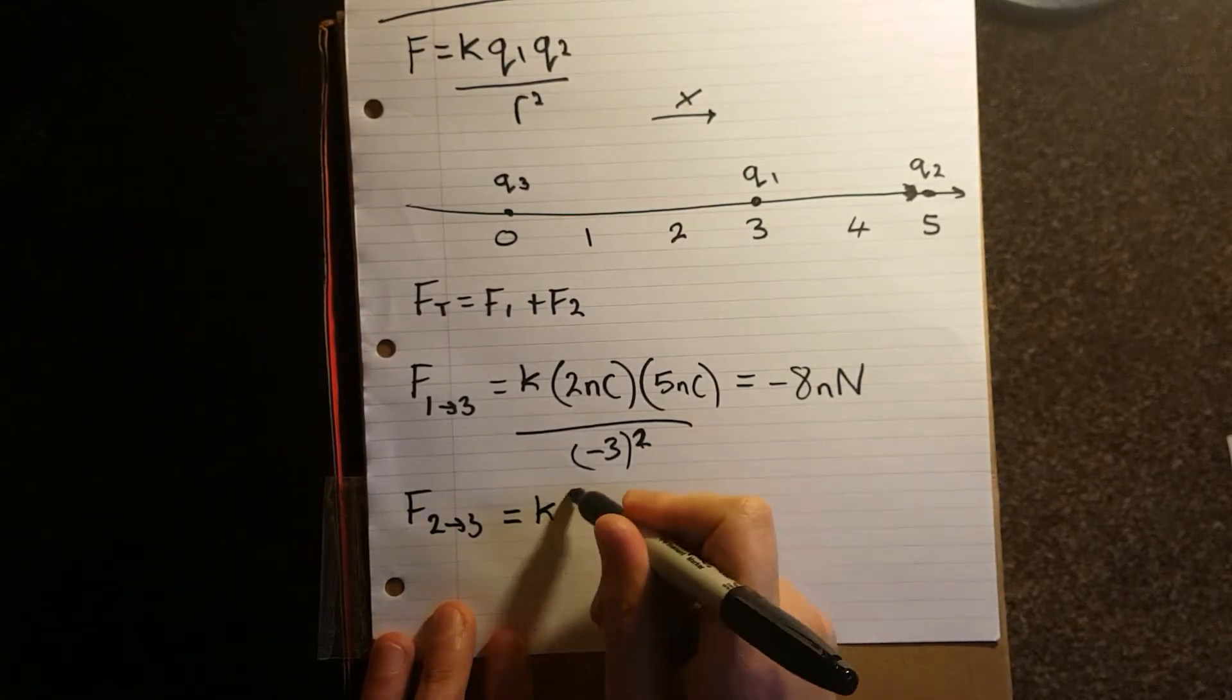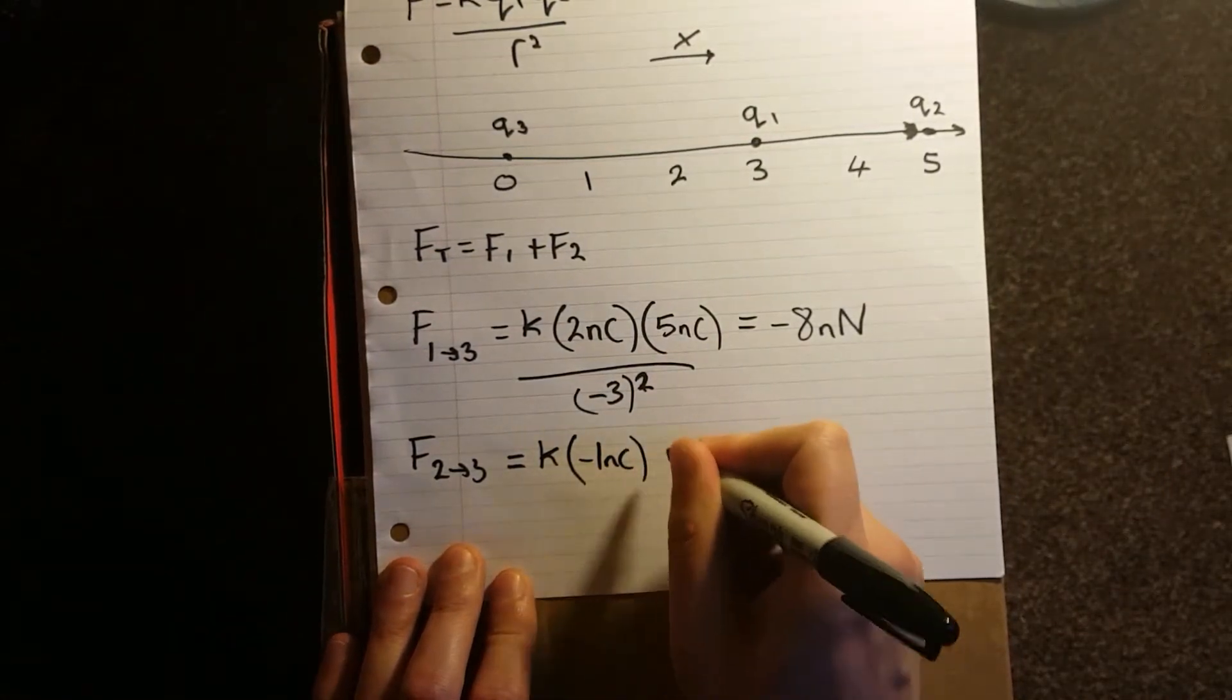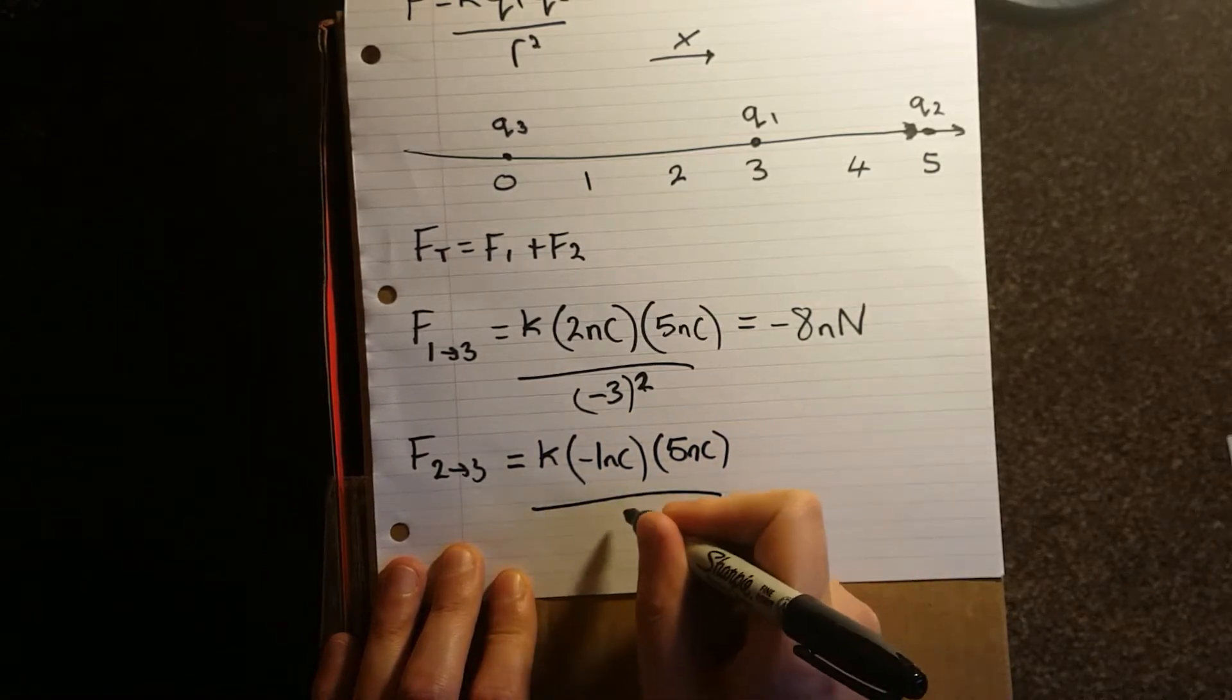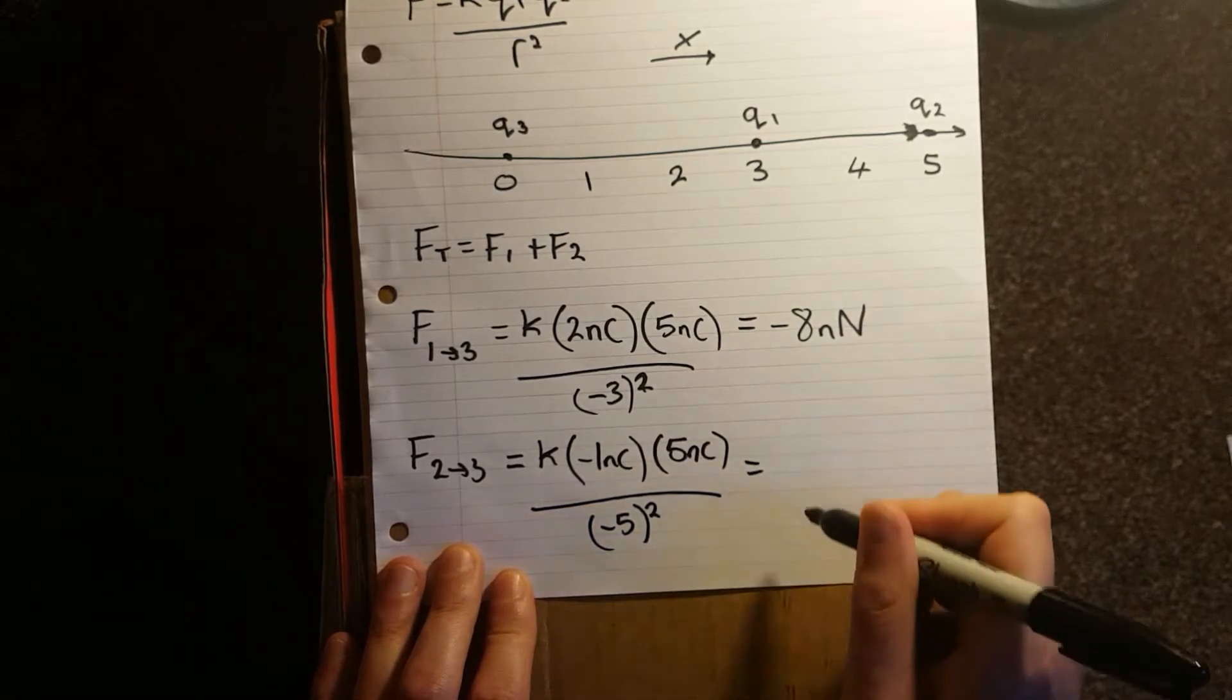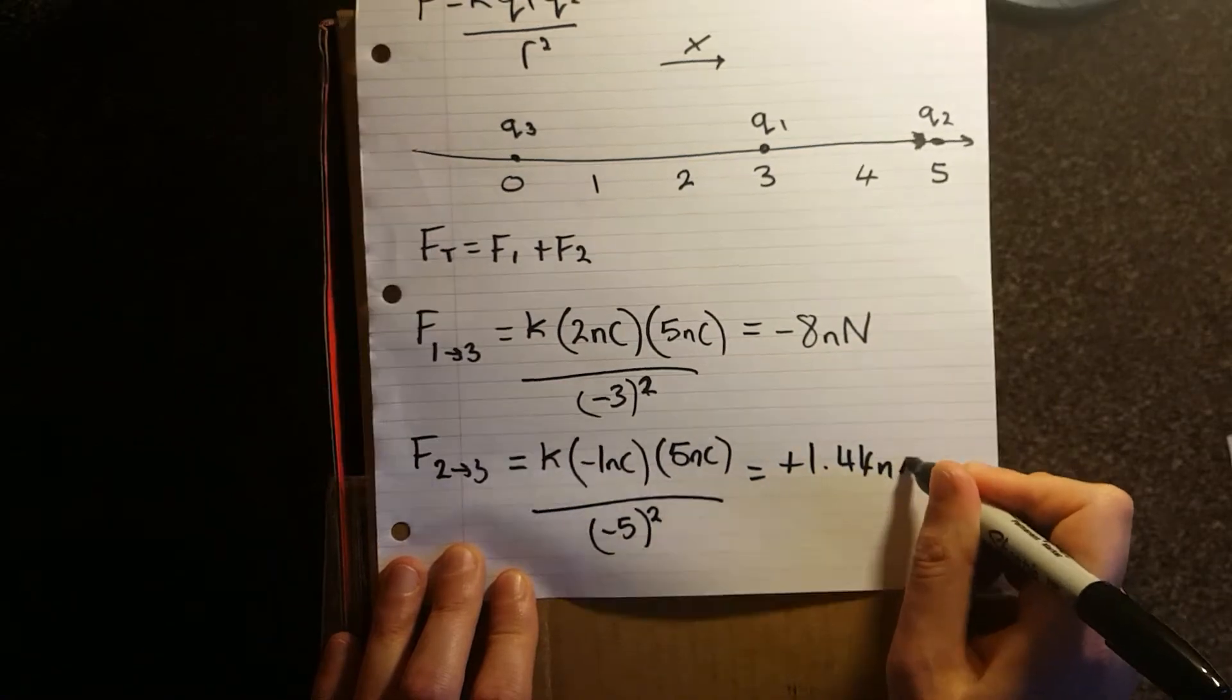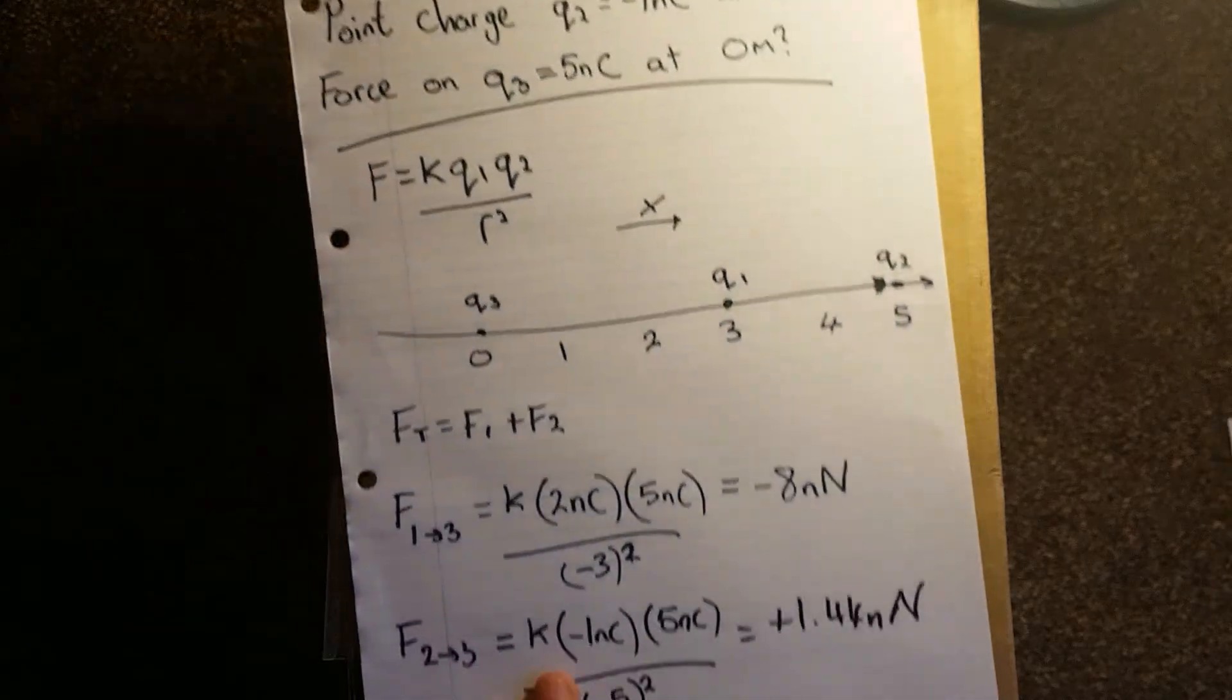F2 to 3, minus 1 nano coulombs times by the 5 nano coulombs times by the distance between them. And this comes out to be positive 1.44 nano newtons.